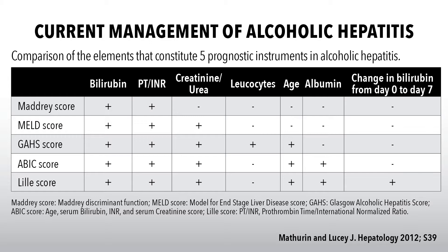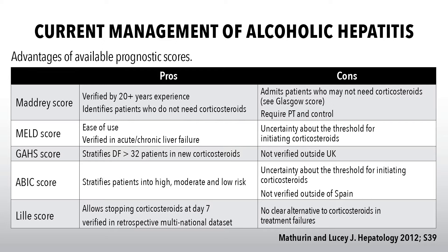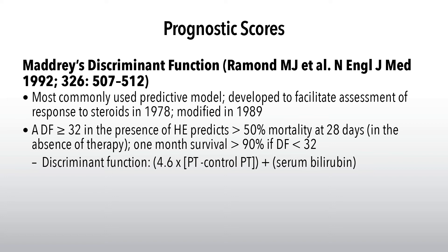Among these scoring systems, bilirubin and INR appear in most, and most look at renal function. Fewer assess leukocytes, age, or albumin. The Maddrey score has been around the longest and is most useful with a DF cutoff of 32. We'll go into more detail about MELD, Glasgow, ABIC, and LEAL scores and how to use them in practice.